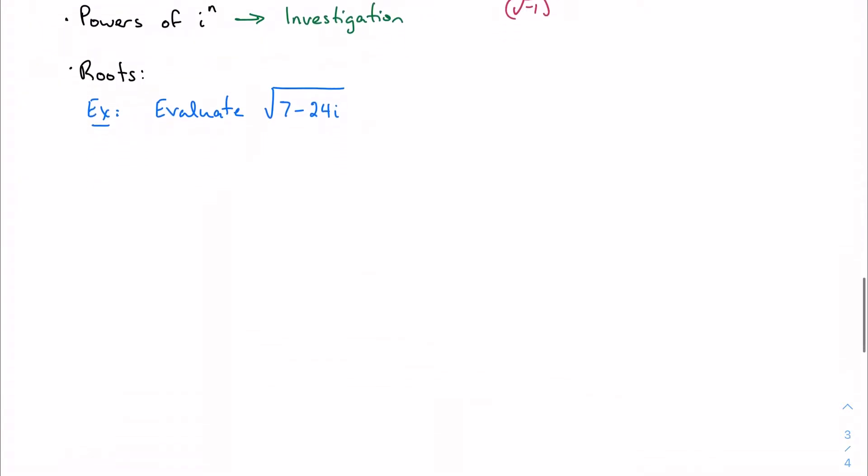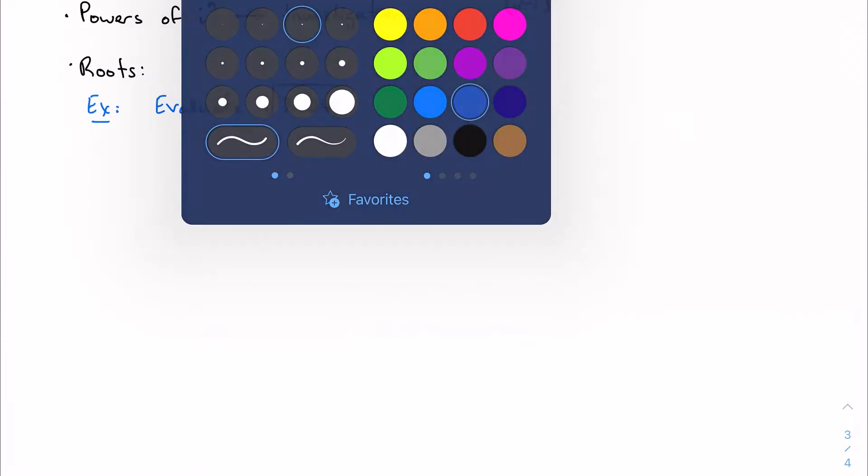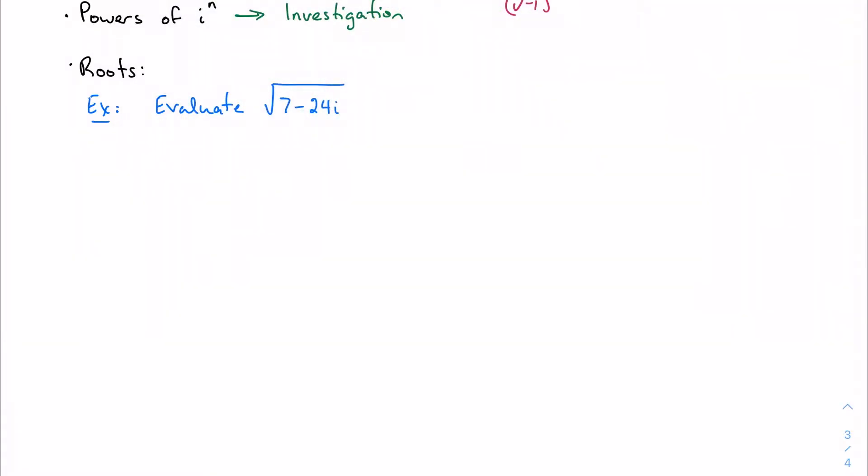I want to focus on something that is much more complicated, and I really want to make sure I walk this through. I want to talk about evaluating something that looks like this: the square root of 7 minus 24i. Your first thought was probably like mine, which is I don't think it's possible. Well, it is.